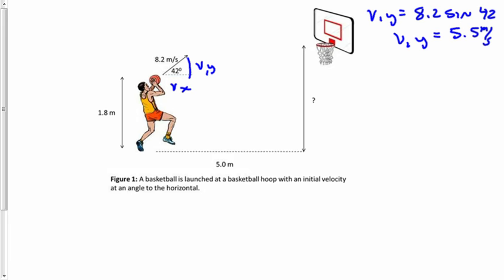Let's do likewise for Vx. Vx equals 8.2 cosine of 42. Vx equals 6.1 meters per second.